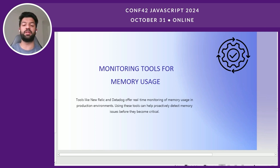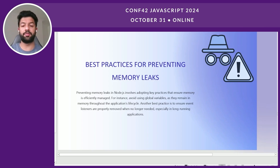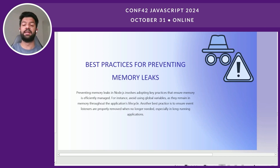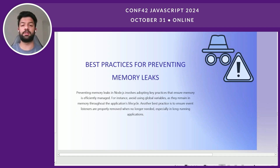Here are some best practices and tips to help prevent memory leaks. First, avoid using global variables as they are kept in memory throughout the entire application lifecycle. Another best practice is to ensure that event listeners inside your app are properly handled and removed when they are no longer needed — especially in long-running applications. Following these tips can help you identify and remove memory leaks by up to 90 percent in your Node.js application.